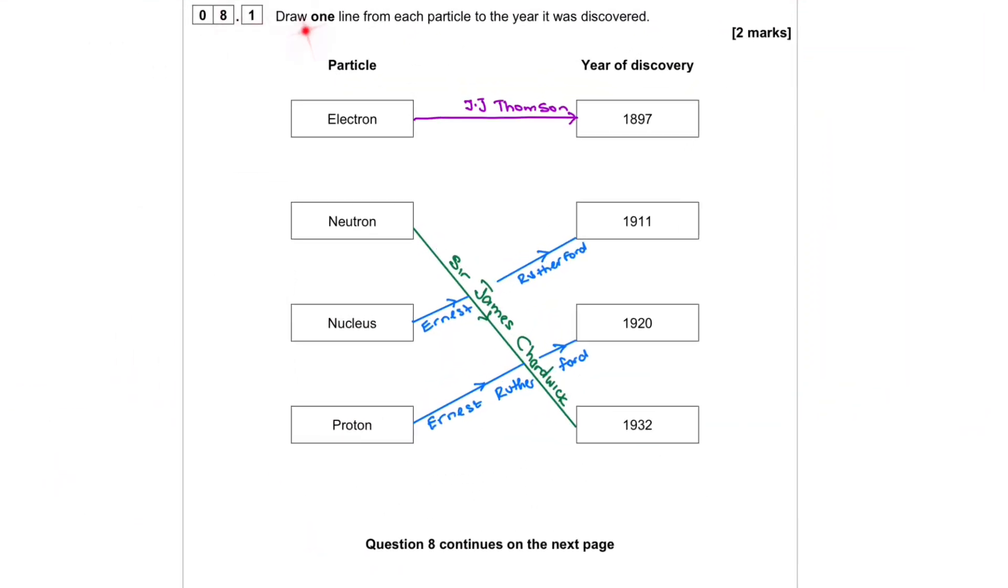Question 8.1. Draw one line from each particle to the year it was discovered. Electron was discovered 1897 by J.G. Thompson.